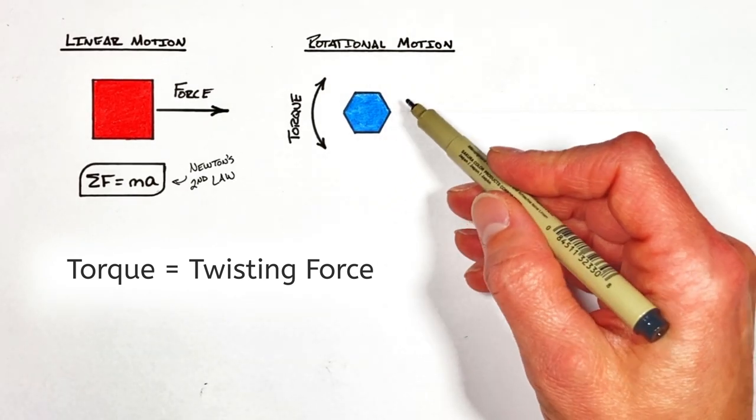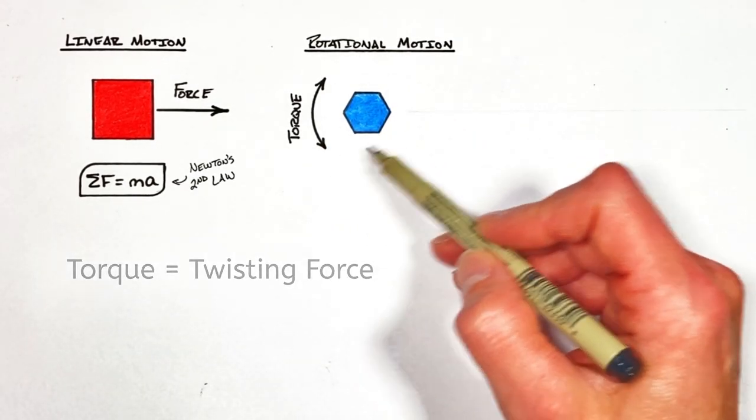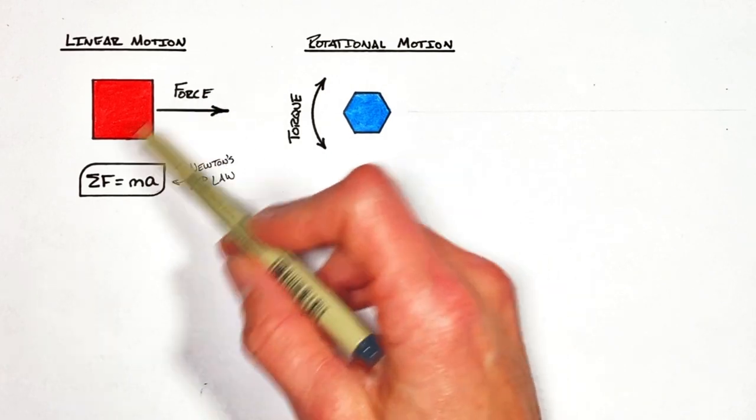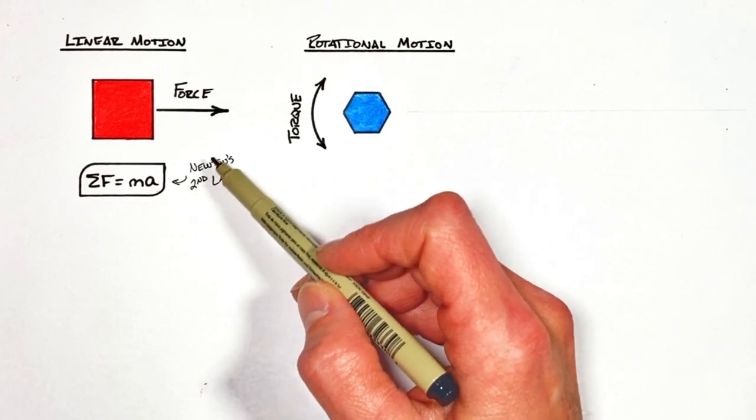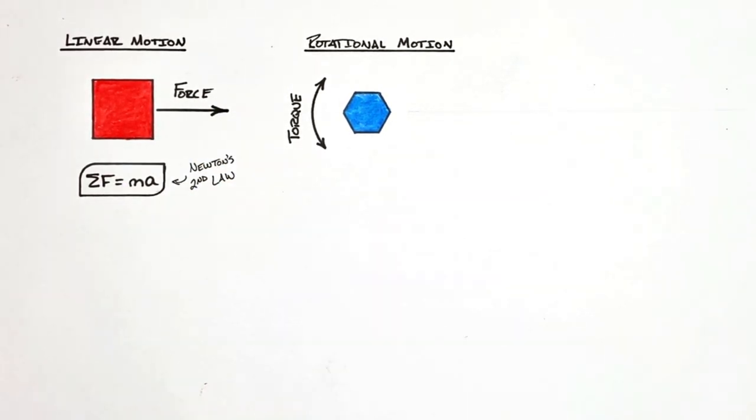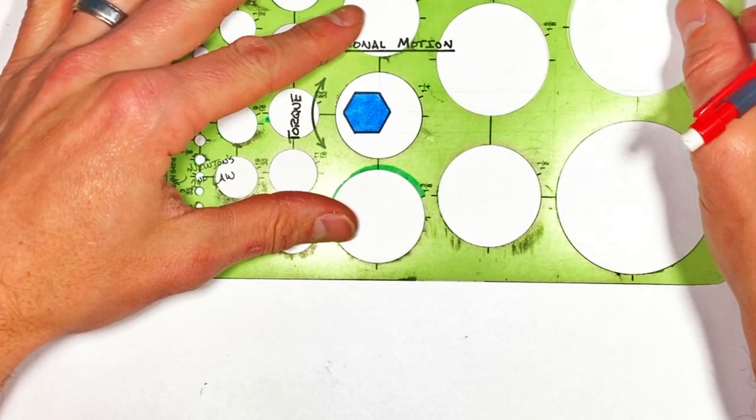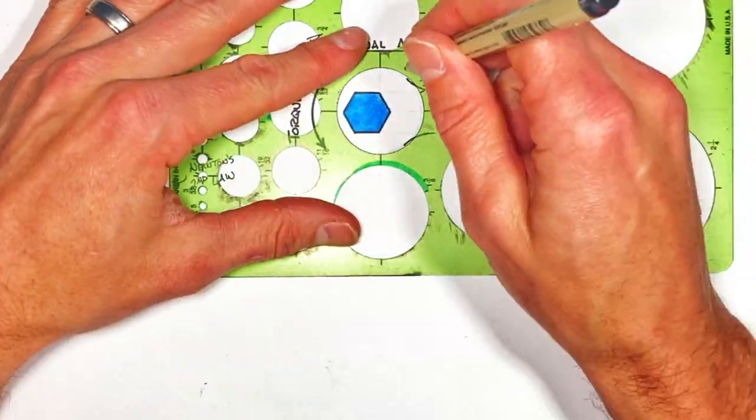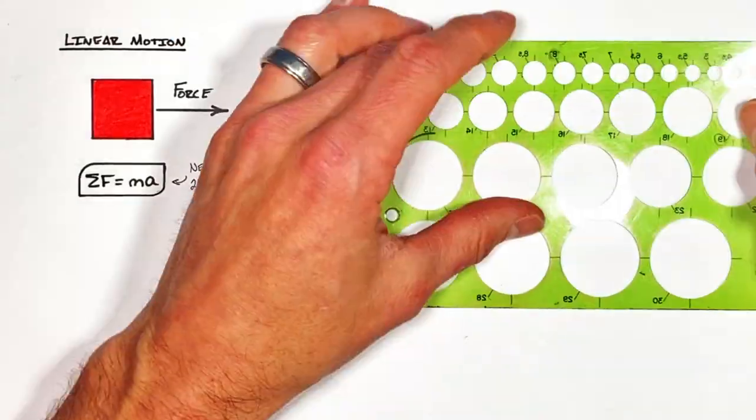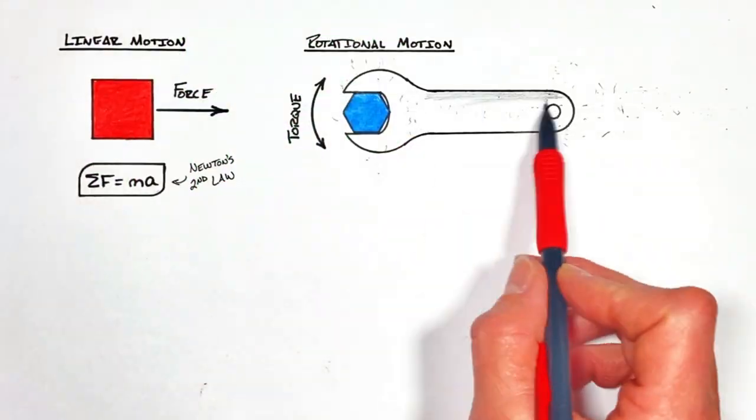But of course the question comes up, what exactly is a torque? How is the torque produced? And how is it both similar and dissimilar to something we've seen before? That is, linear force. So to get a better understanding of both the equations and concepts of torque, let's put a wrench on this bolt right here.